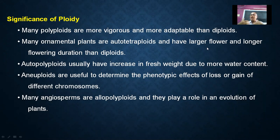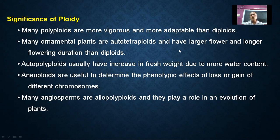Longer flowering duration is one key advantage. Ornamental plants are mutated using colchicine to produce these tetraploids.